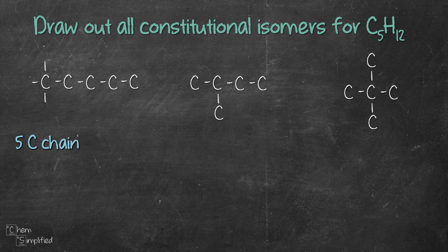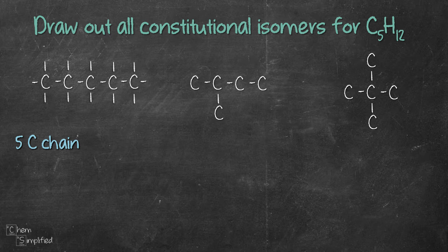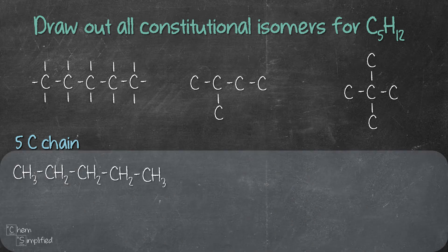The second carbon is connected to 2 carbons, that means it has 2 remaining bonds. Same goes to the next 2 carbons. The last carbon has 3 bonds. Putting in all the hydrogens, here's the condensed structure of the first isomer.